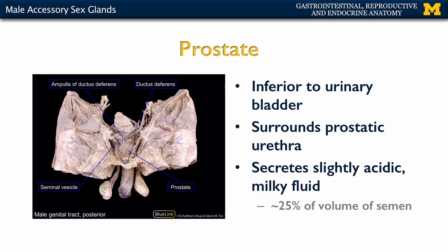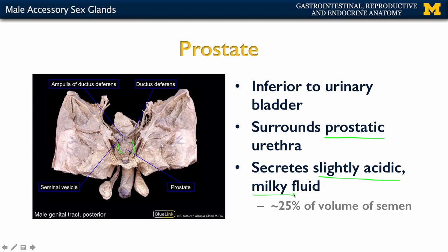Moving inferiorly, you have the prostate. As mentioned, it's about the size of a ping pong ball, inferior to the urinary bladder. As we discussed in our male urethra lecture, it is surrounded by the prostatic urethra, and it is within this prostatic urethra that you have the secretion and dumping of not only sperm but the rest of the seminal fluid from the seminal vesicles. Unlike the seminal glands, the prostate secretes a slightly acidic fluid with a milky white appearance, containing citric acid, which helps with ATP production needed by sperm.